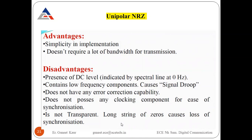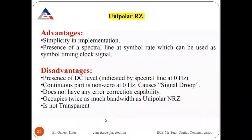The disadvantages of unipolar NRZ are: presence of a DC level, it contains low frequency components causing signal drop, no error correction capability, no clocking component for synchronization, it is not transparent, and long strings of zeros cause loss of synchronization.